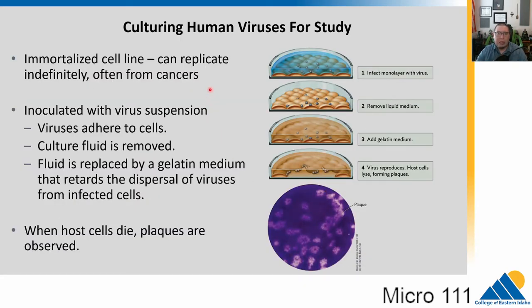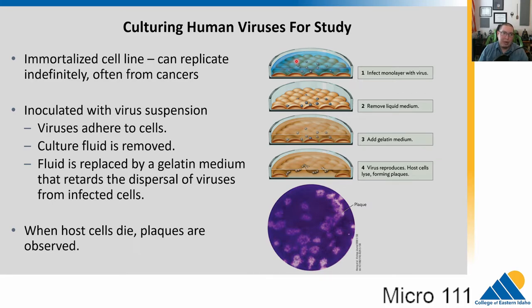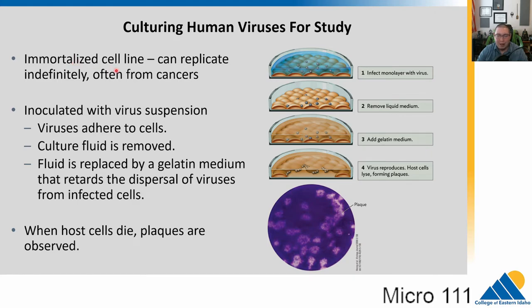If you want to culture something like a human virus it's a little more tricky. Human cells do not like to grow outside of the human body, and when they do grow they have very strict regulation on when they can grow and divide. If you took them out and put them into a nutrient medium they could grow and divide for several replications, but after about 20 or so they would stop, because there are checks in our genome that say you've divided too many times and might have mutations that could lead to cancer. Cancer cells have mutations that often get around these checks, so cancer cells can be immortalized — they will grow and reproduce indefinitely. Many of our cell cultures are based on cancer cells.